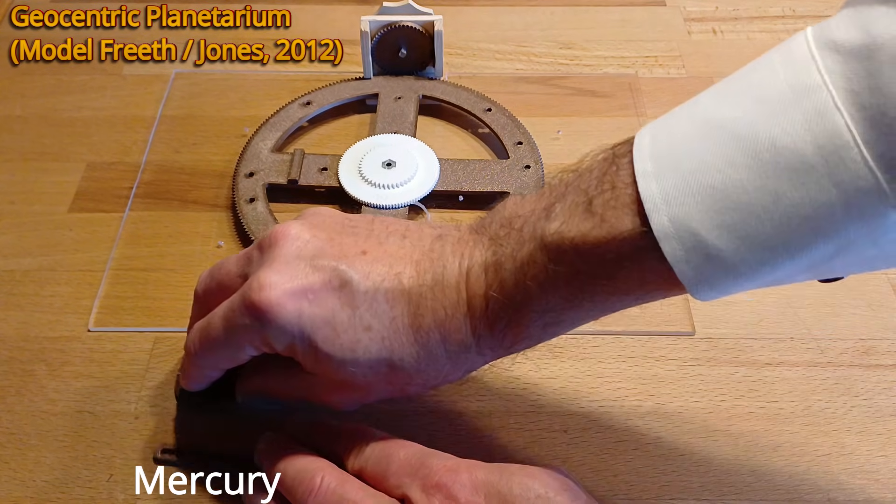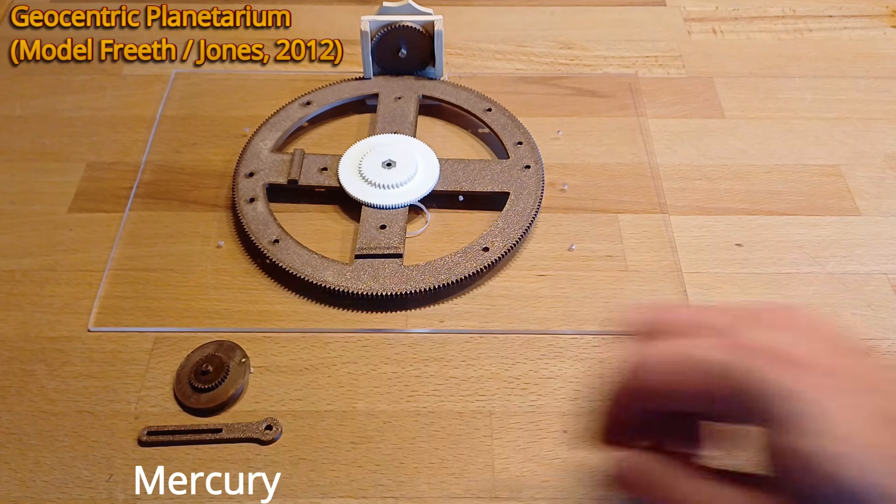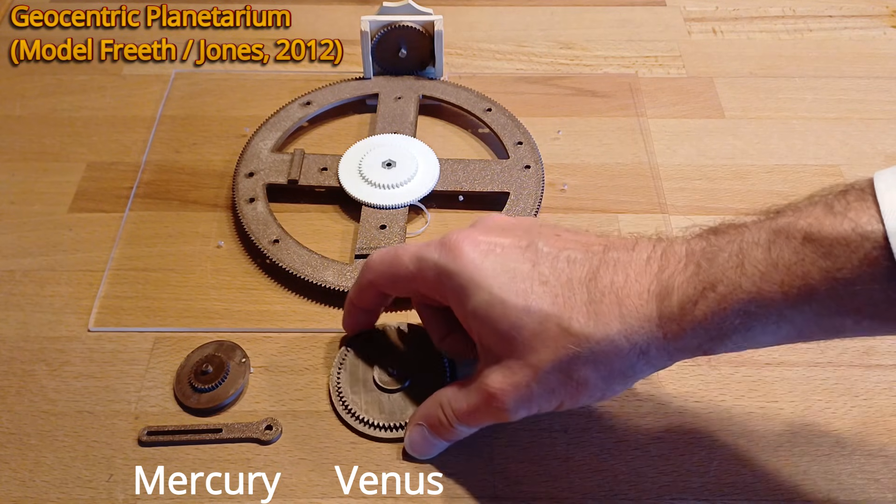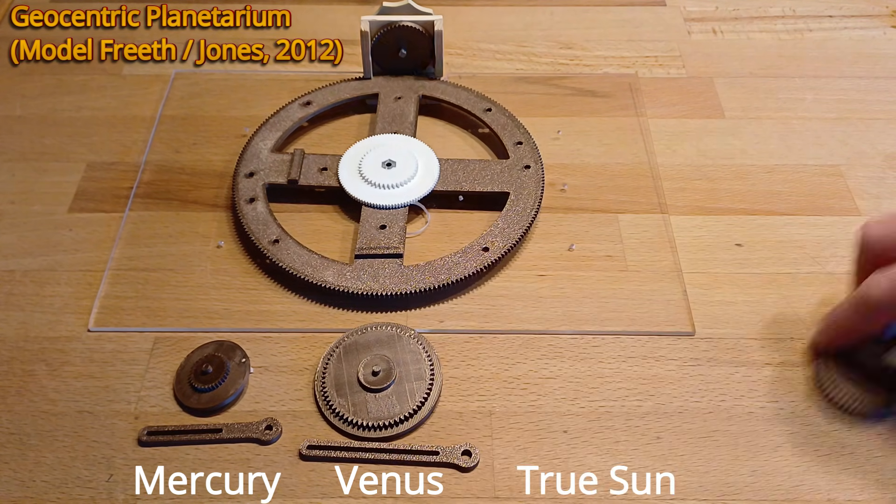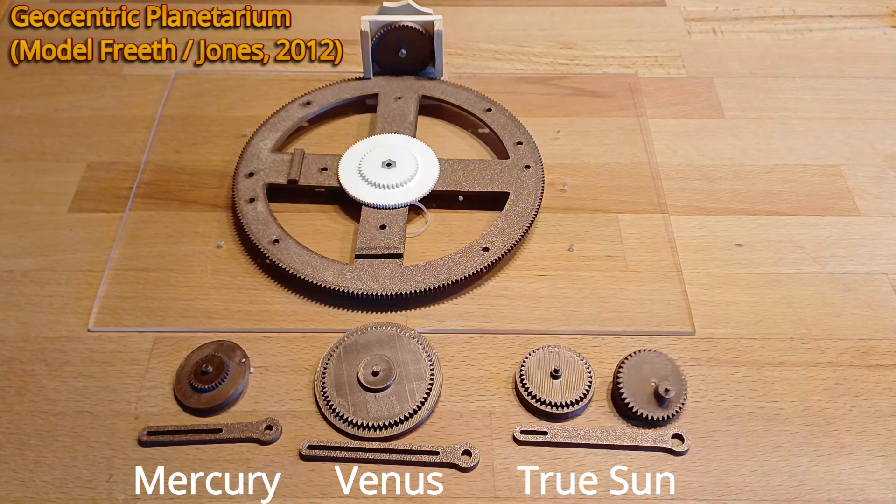Then the Mercury wheel with the pin at the top and the Mercury follower. The same applies to Venus, the Venus wheel with pin and follower. And finally the two wheels for the true Sun also with the follower.